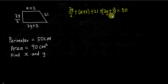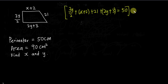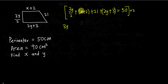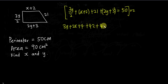I'll try to solve this as fast as possible. I see the 'over 2' fraction here, so whenever I see a fraction, I multiply the whole equation by the denominator. Since it's over 2, I'll multiply everything by 2. So 2 and 2 simplify to give 3y. Then 2 multiplied into (x + 2) gives 2x + 4. Then 2 multiplied by 21 gives 42. Then 2 multiplied by 2y gives 4y, and 2 multiplied by 3 gives plus 6, equals 100.